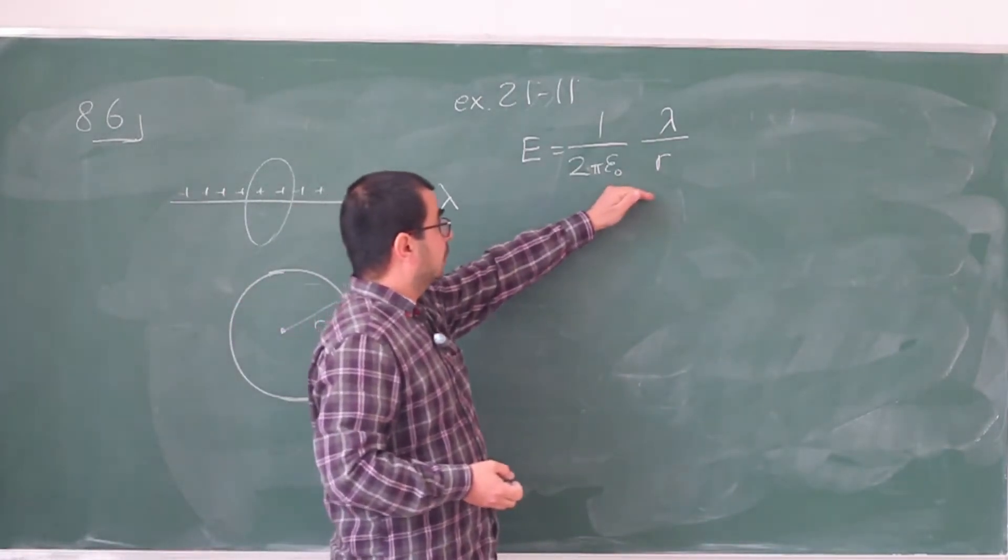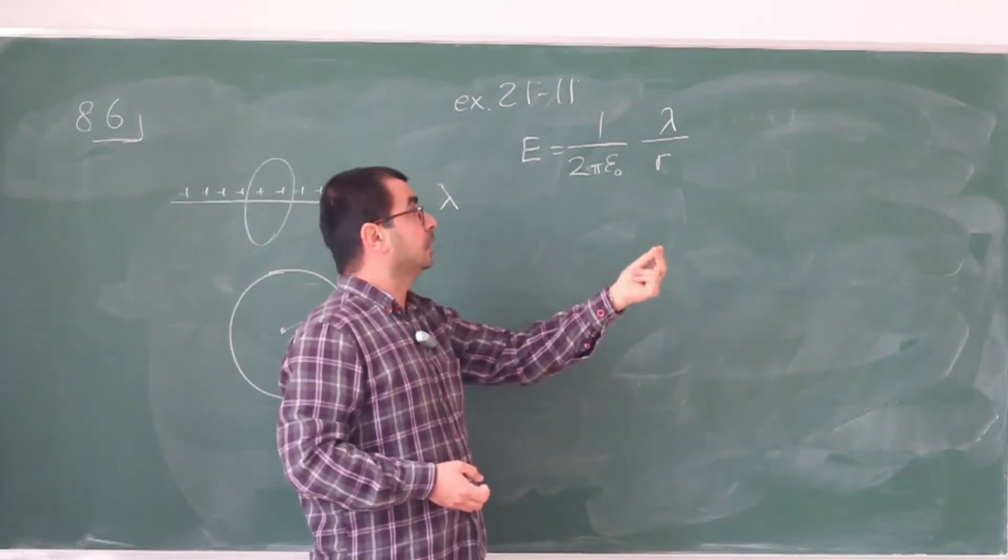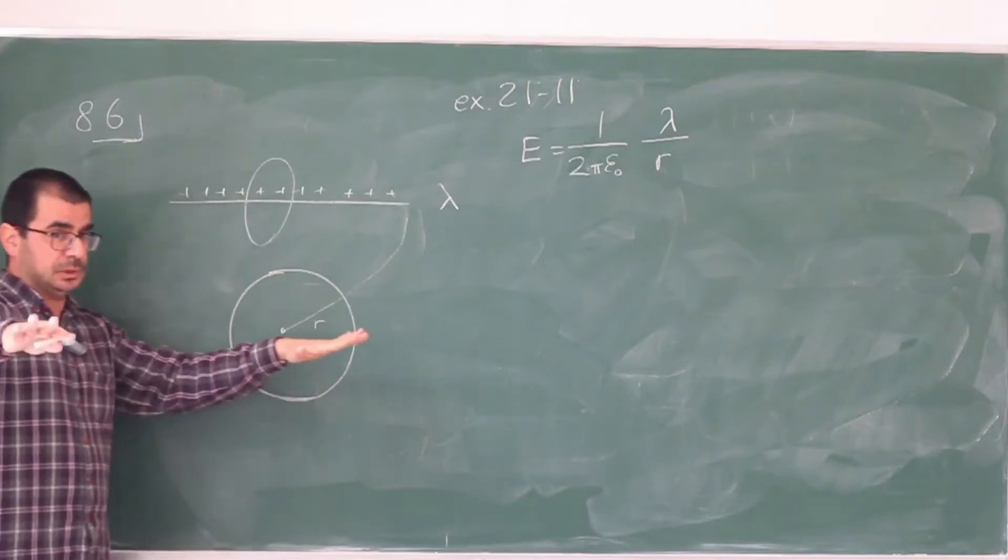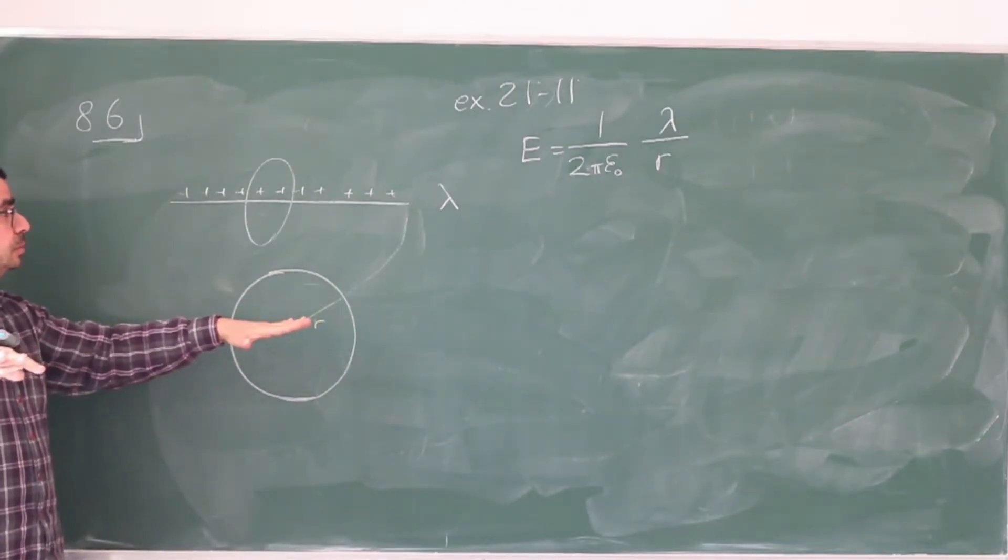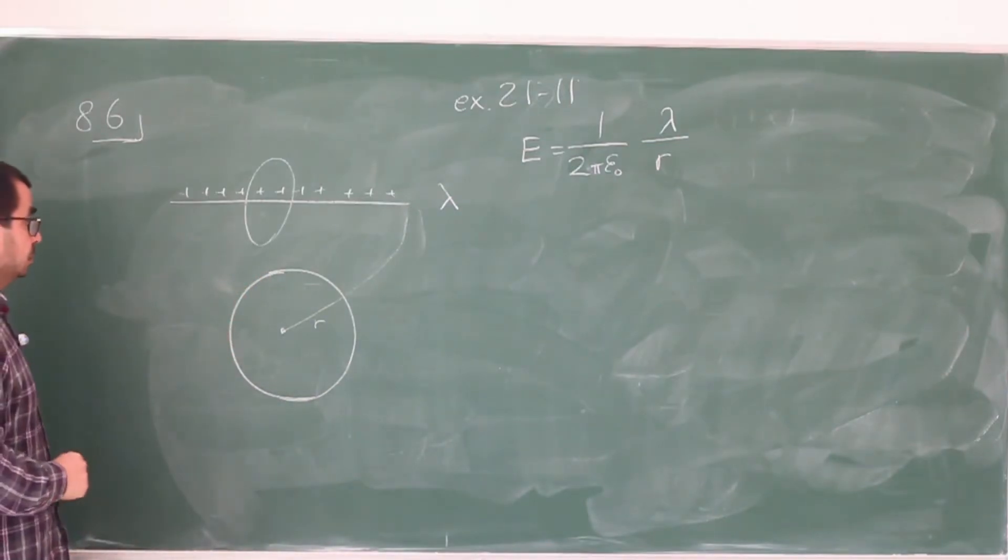By the way, so this is something characteristic. So for a point charge, the electric field strength decreases as 1 over r square. For a line of charge, it decreases as 1 over r. For a surface of charge, uniform charge distribution, it's constant. It doesn't drop at all. Right? So r square, r, and r to the 0, so to say.